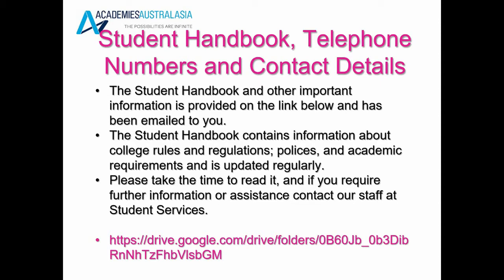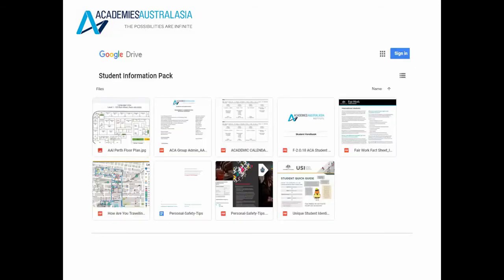The Student Handbook, telephone numbers and contact details. The Student Handbook and other important information is provided on the link below and has been emailed to you. The Student Handbook contains information about college rules and regulations, policies and academic requirements and is updated regularly. Take the time to read it and if you require further information or assistance, contact our staff at Student Services. You will receive a Student Information Pack with more details and instruction, and if you do need further help or have any questions, please come and see us at Student Services.